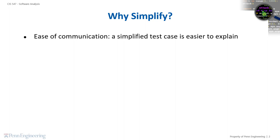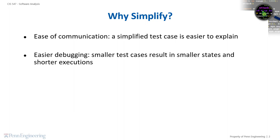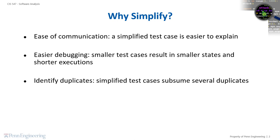Simplifying the information in a bug report down to only what is relevant is important for several reasons. First is ease of communication — a simplified test case is easier to communicate to members of the development and testing team. Second, simpler test cases lead to easier debugging, with smaller states and shorter executions. Third, it allows us to identify and collapse duplicate issues, as a simplified test case can subsume test cases in several bug reports.